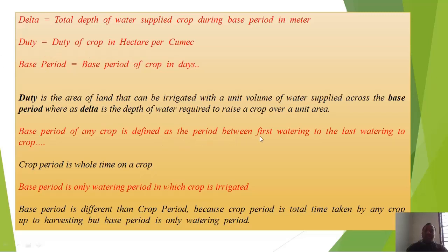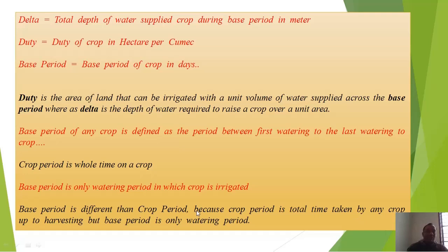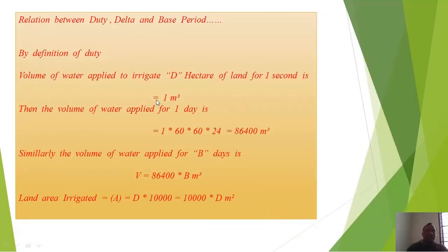Delta is the depth of water required to raise a crop over a unit area. Base period of any crop is defined as the period between the first watering and the last watering of the crop. Note that base period is different from crop period — crop period is the total time taken by any crop up to harvesting, but the base period is only the watering period.